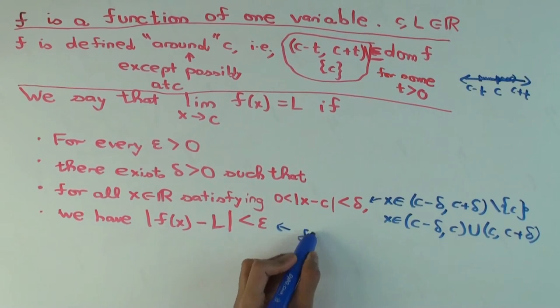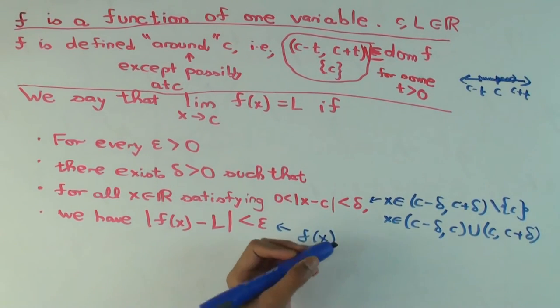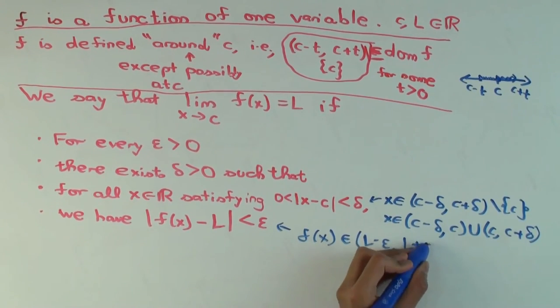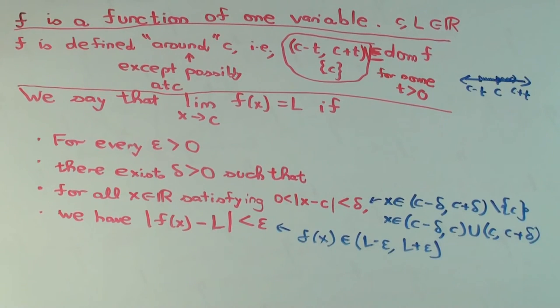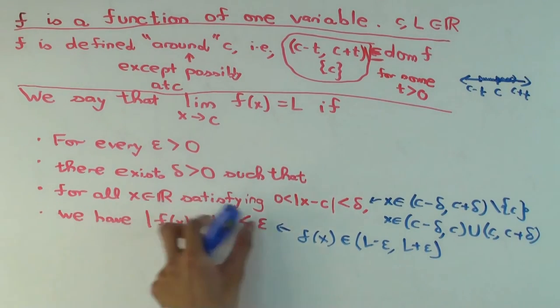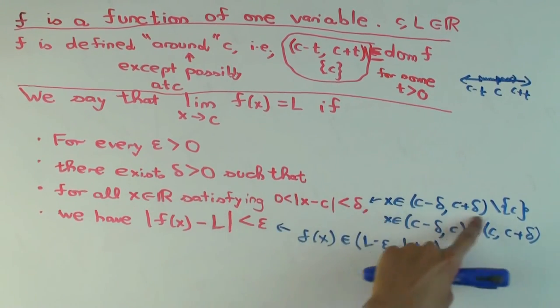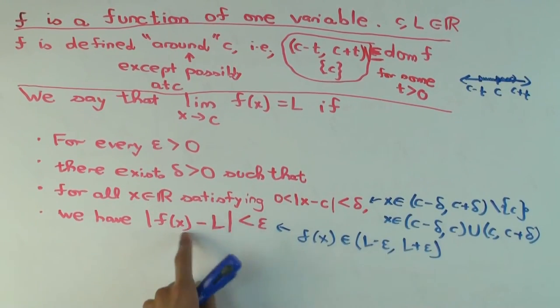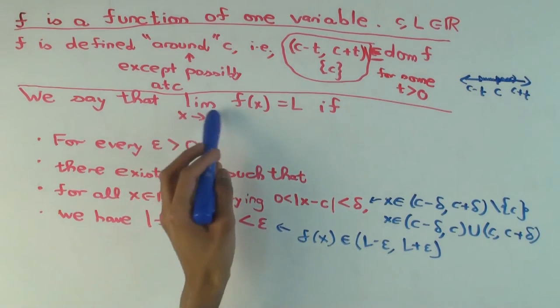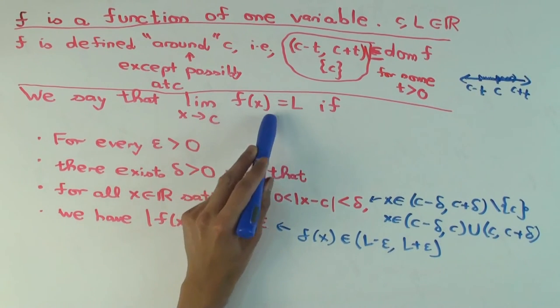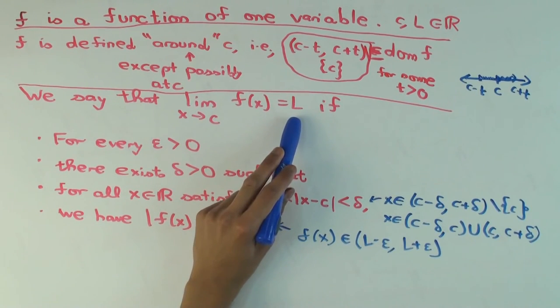You can do something similar on the f(x) side. What interval is this saying? f(x) is in L minus epsilon to L plus epsilon. So instead of writing the conditions in inequality form, you could have written them in interval form. The way you read this is, you say limit as x approaches c of f(x) equals L.